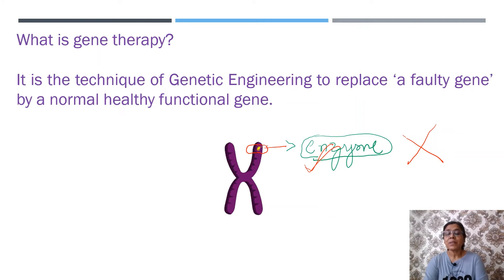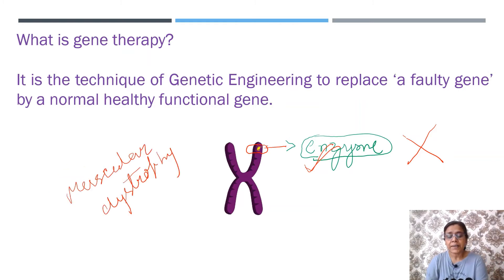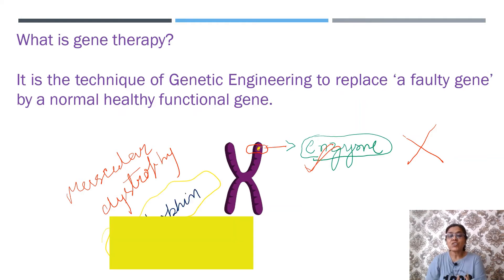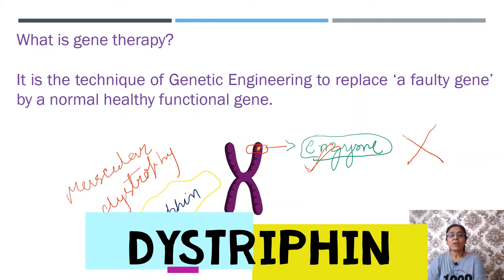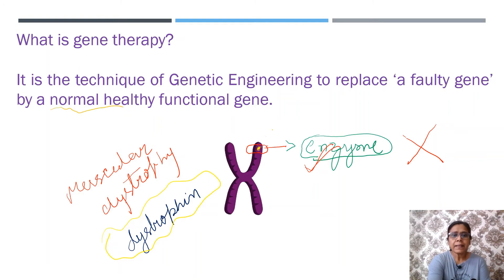Here I will take one example: muscular dystrophy. Muscular dystrophy is a genetic disorder that occurs due to deficiency of a protein called dystrophin, and dystrophin is very important for the contraction of the muscle. Under gene therapy, the faulty gene is replaced by a normal, healthy, functional gene. This is the basic idea behind gene therapy.